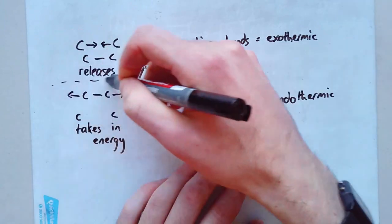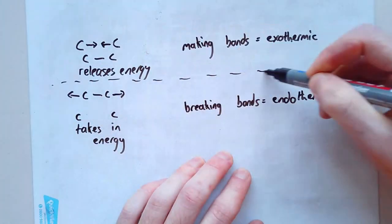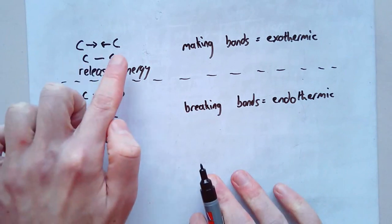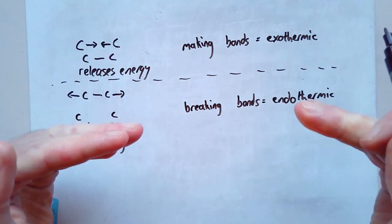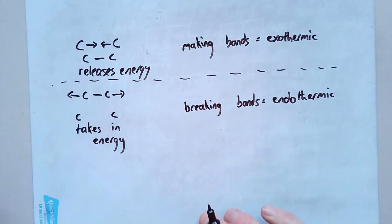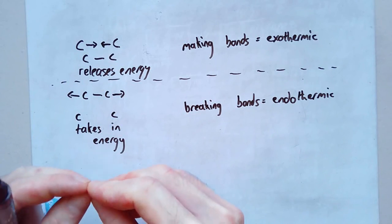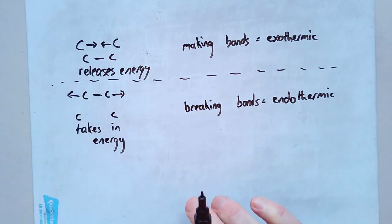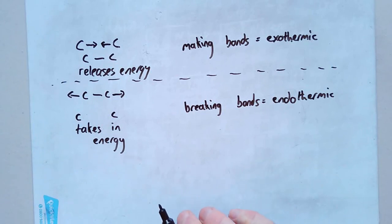Just to make really clear these are two separate processes: if I've got two carbon atoms snapping together, like a magnet, they release energy — that's an exothermic process. If I've got two carbon atoms that are bonded and I want to pull them apart and break that bond, I have to put energy in, which makes it an endothermic process.